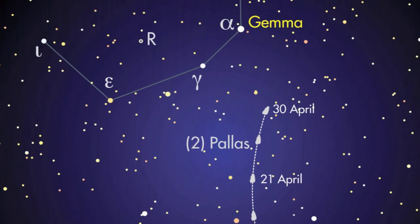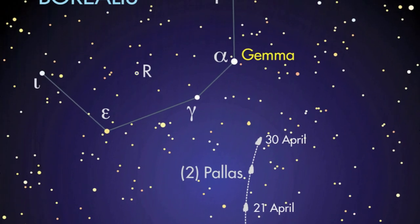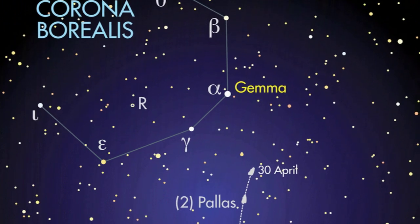But the best time to see it will be when it's at opposition on the 30th of April. That night, it'll be shining with an apparent magnitude of plus 8.7, so it's an ideal target for binoculars or a small telescope. You can use the main sky chart in April's Sky at Night magazine to find the rough location to look for Pallas.